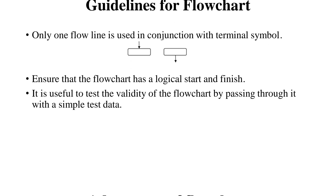Only one flowline should be used in the terminal symbol. When starting the flowchart, the start symbol will have only one arrow mark coming out of it. When ending the flowchart, the terminator symbol will have one inlet and no outlet. Likewise, the start symbol will not have any inlet. Each and every flowchart should have a proper start and finish, and it is used to test the validity of the flowchart. When processing with simple data, it should give the proper desired outcome.